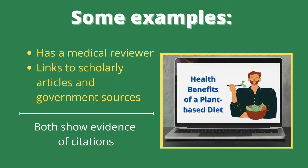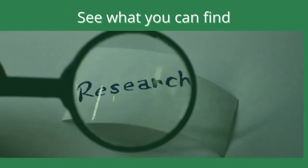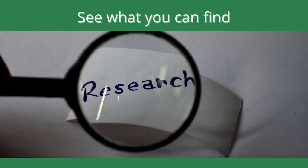A webpage discussing the health benefits of a plant-based diet has a medical reviewer. It also provides links to its sources, which are scholarly journal articles and government sources. Both of these provide evidence of citations. Now see what you can find using the criteria for citations.